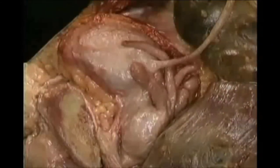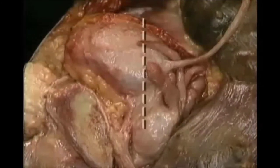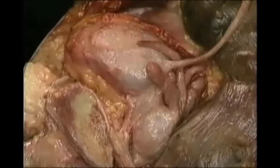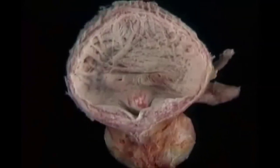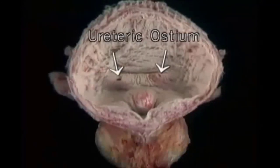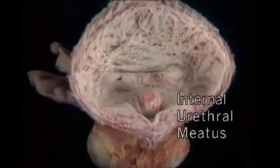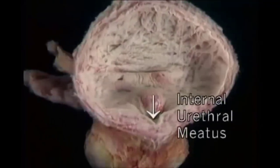To see the inside of the bladder, we'll look at an isolated specimen that's been divided along this line. The wall of the bladder consists of smooth muscle lined with mucosa. On each side, the ureter opens into the bladder obliquely at the ureteric osteum. Urine leaves the bladder through this opening, the internal urethral meatus, to enter the urethra.